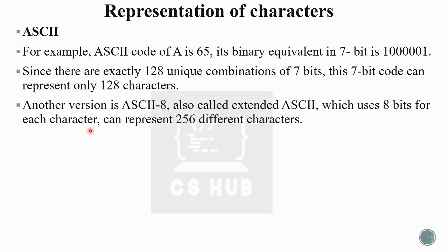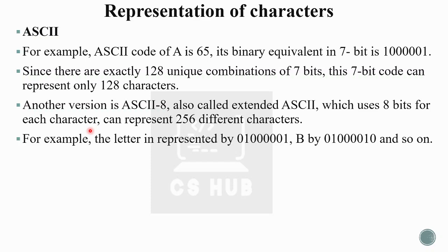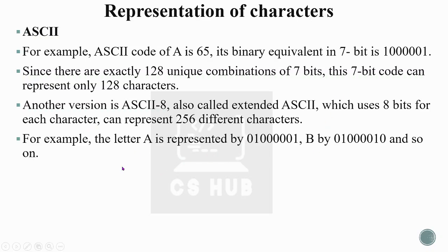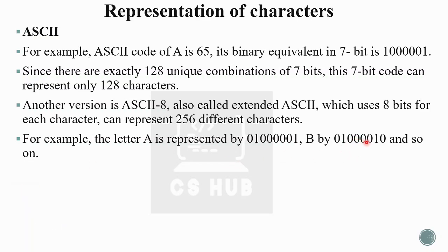Another version is ASCII-8, also known as Extended ASCII. As the name indicates, it uses 8 bits instead of 7 bits for each character. With 8 bits we can make 2 raised to 8, which is 256 different combinations. Therefore we can store 256 different characters. For example, capital 'A' is represented by 01000001, capital 'B' by 01000010, and so on.